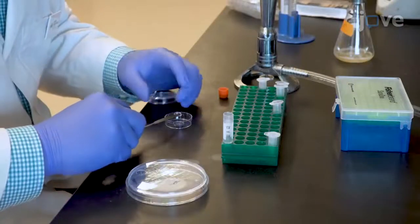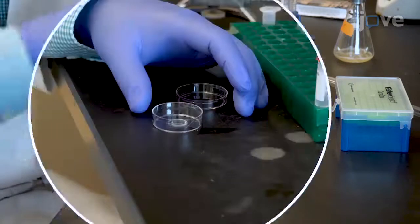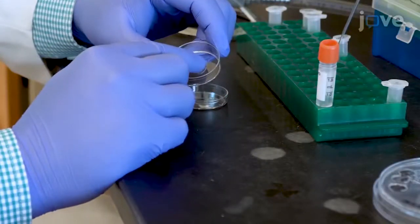Place an 11 millimeter diameter agarose slab over the sample and gently tap to make sure the slab is flat against the cover slip.